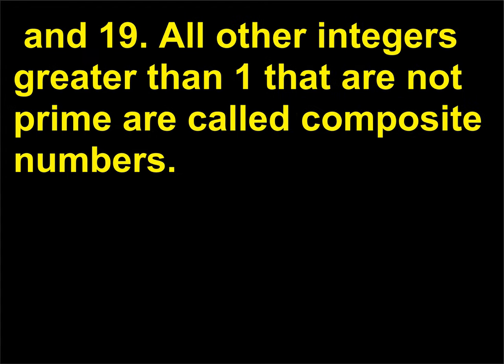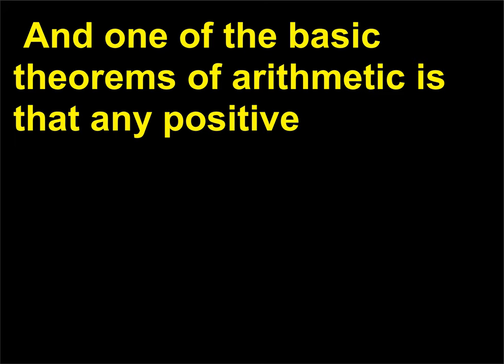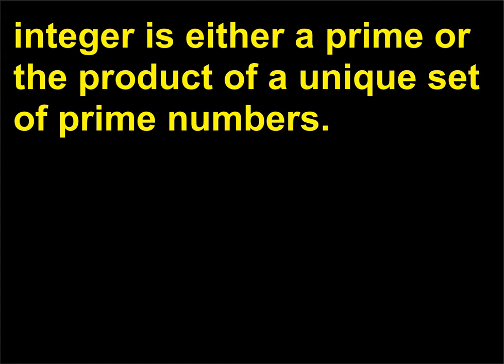All other integers greater than 1 that are not prime are called composite numbers. There are other rules: the number 1 is unique and is not considered a prime or composite number. And one of the basic theorems of arithmetic is that any positive integer is either a prime or the product of a unique set of prime numbers.